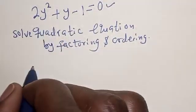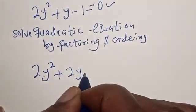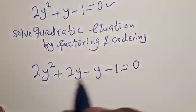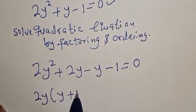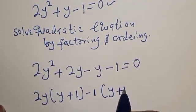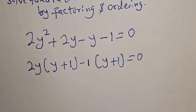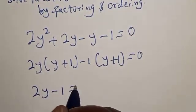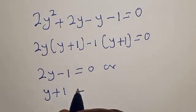We have 2y squared plus 2y minus y minus 1 is equal to 0. Here we have 2y into y plus 1 minus 1 into y plus 1 is equal to 0. Then 2y minus 1 is equal to 0 or y plus 1 is equal to 0.